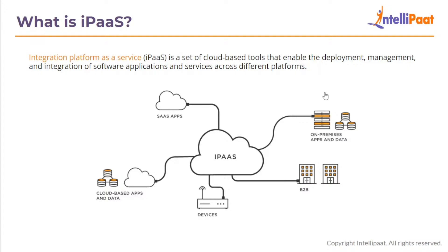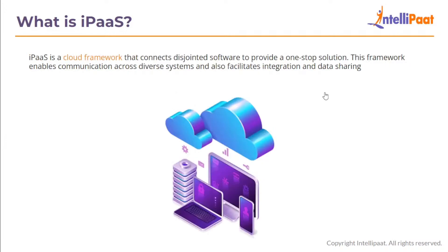Organizations can easily integrate on-premise applications with cloud applications by adopting the IPaaS architecture. IPaaS is a cloud framework that connects disjointed software to provide a one-stop solution. This framework enables communication across diverse systems and also facilitates integration and data sharing, unlocking the potential for varied platforms to work collaboratively.